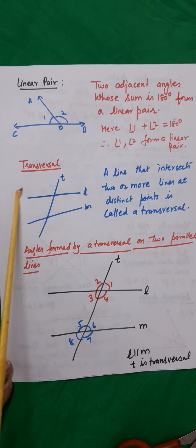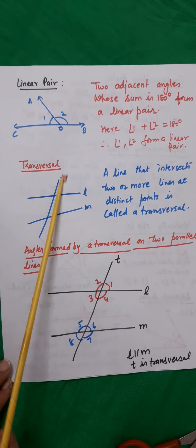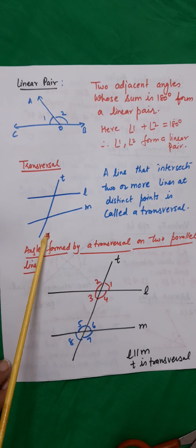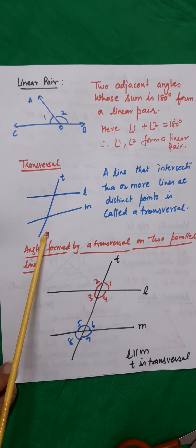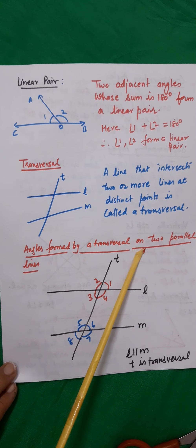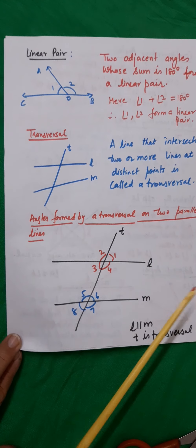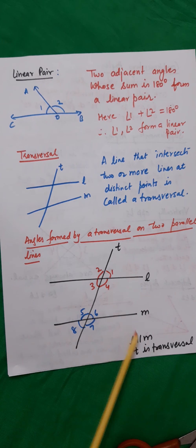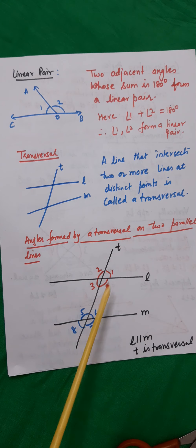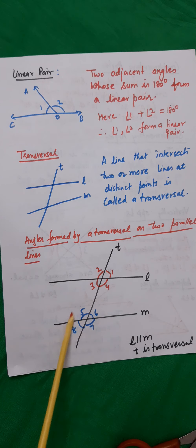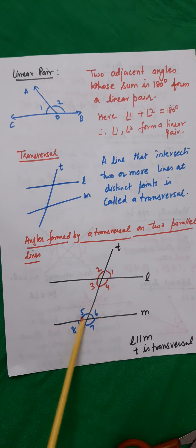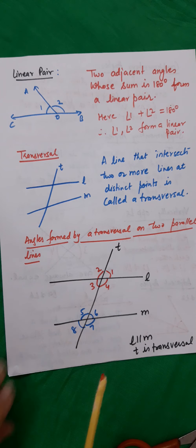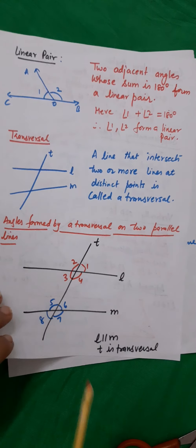What is a transversal? If you have two lines and there is one line cutting them at two distinct points, this is known as the transversal. If you have two parallel lines and a transversal over them, you will have an appearance like this. L and M are parallel, T is the transversal. There are eight angles formed here — 1, 2, 3, 4, 5, 6, 7, and 8. Mathematicians have classified them very beautifully into various types of angles.